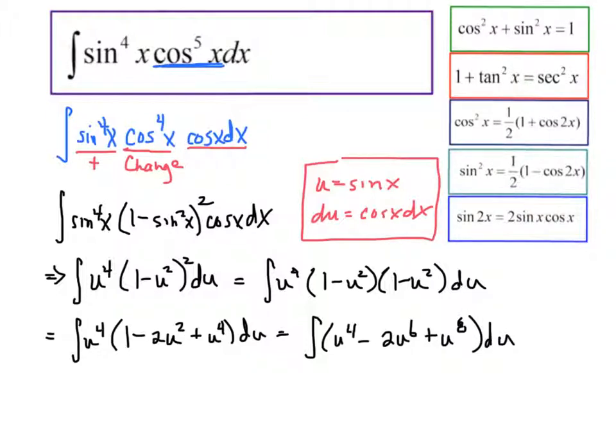The antiderivative, 1 fifth u to the fifth minus 2 sevenths u to the seventh plus 1 ninth u to the ninth plus c. And I'm out of room. I want to move on. I rely on the fact that at this point, you can substitute everything back in. But let me just go back here for a second.